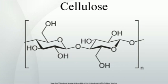This linkage motif contrasts with that for α-glycosidic bonds present in starch, glycogen, and other carbohydrates. Cellulose is a straight-chain polymer; unlike starch, no coiling or branching occurs, and the molecule adopts an extended and rather stiff rod-like conformation, aided by the equatorial conformation of the glucose residues. The multiple hydroxyl groups on the glucose from one chain form hydrogen bonds with oxygen atoms on the same or on a neighboring chain, holding the chains firmly together side by side and forming microfibrils with high tensile strength.